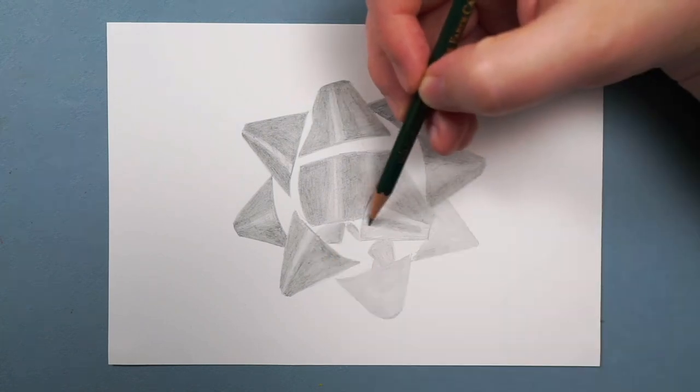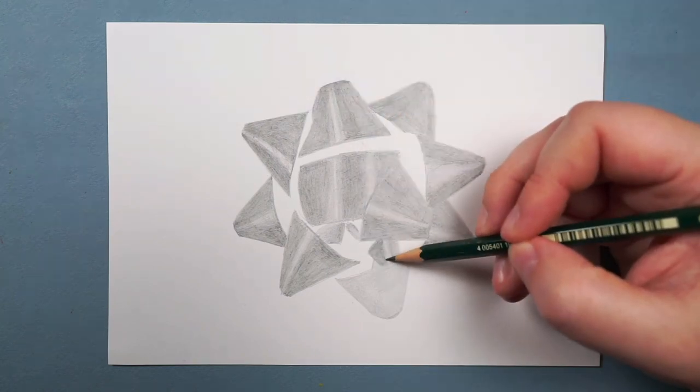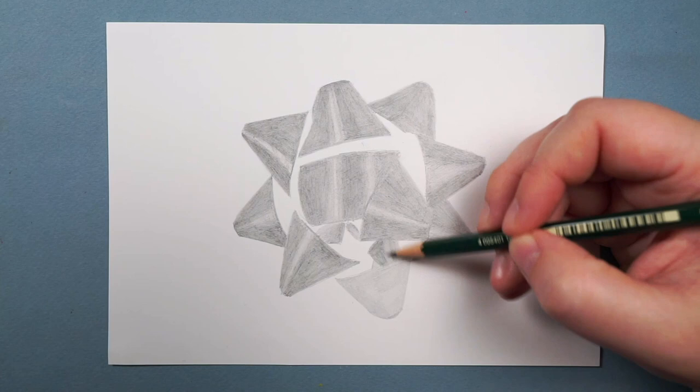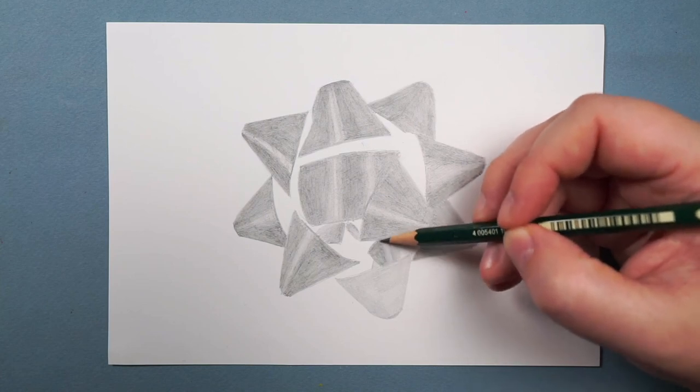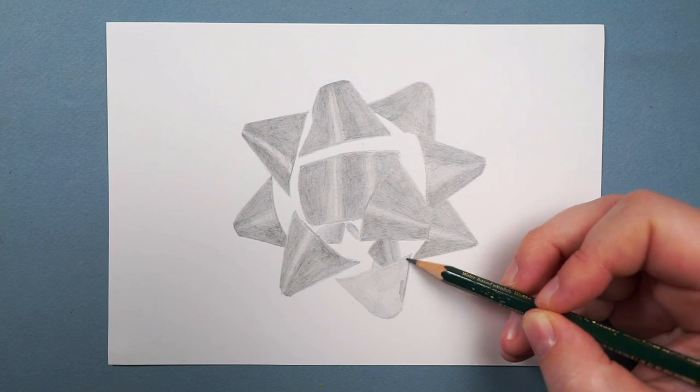Once I've gone over the whole of the bow with these first two pencils, I have something that looks like this. It's looking reasonably smooth, maybe a little bit scribbly, and I've got no pencil down on the absolute darkest areas, but that's okay.